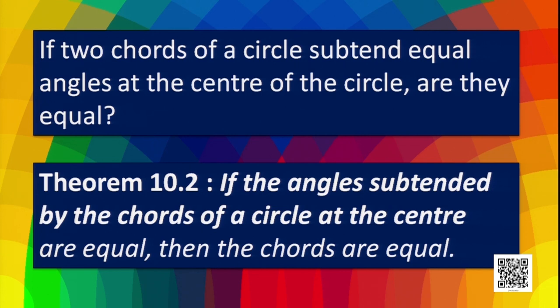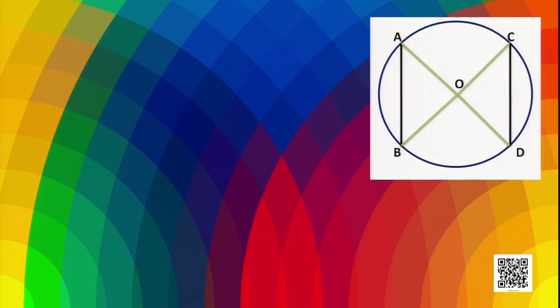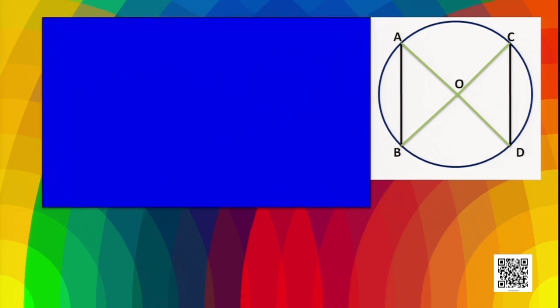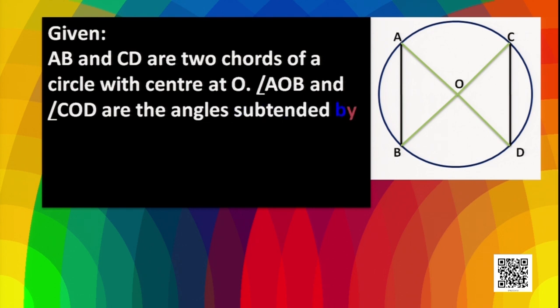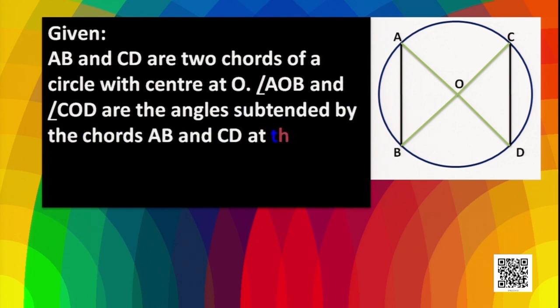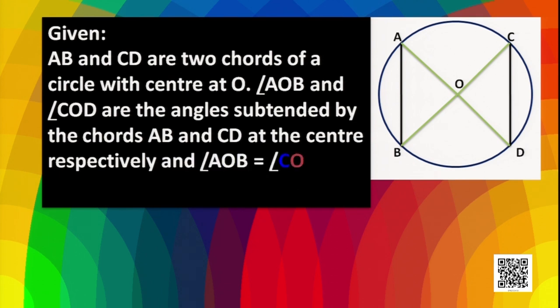In the figure we have two chords AB and CD and the subtended angles AOB and COD at the center. So in the given part, AB and CD are two chords of the circle with center O. Angle AOB and angle COD are the angles subtended by chords AB and CD at the center respectively, and angle AOB is equal to angle COD.